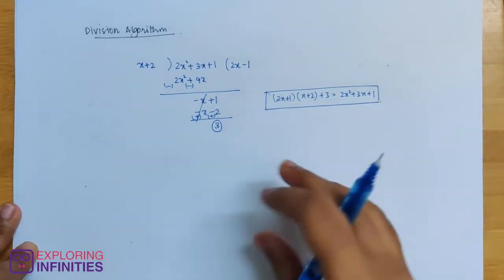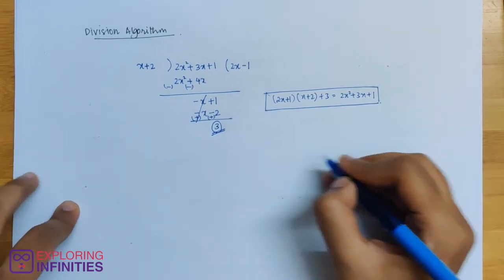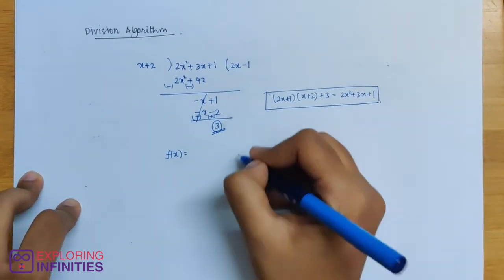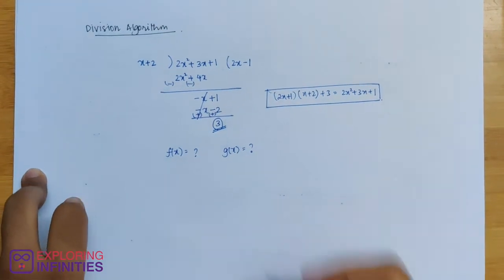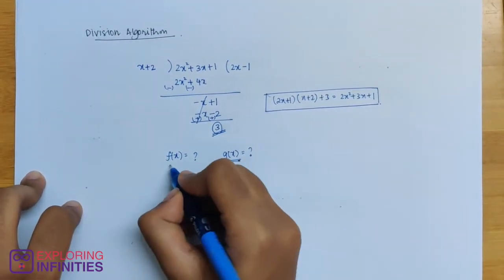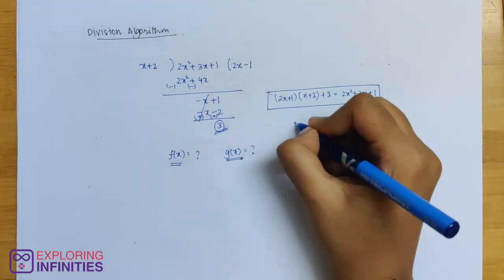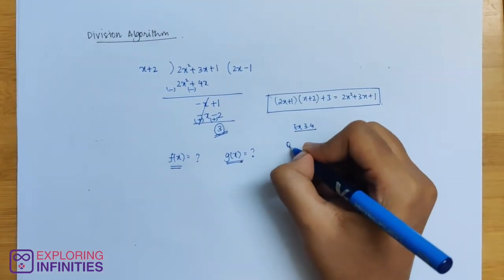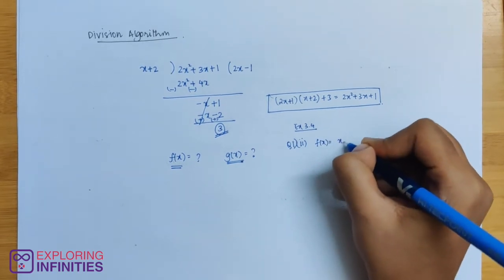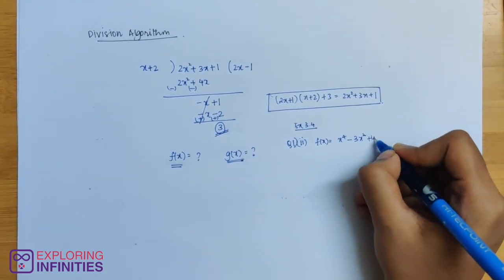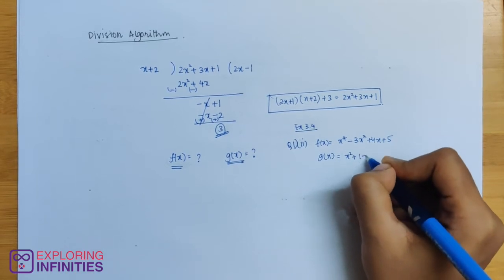When we relate zeros to polynomials using division algorithm, if remainder is zero, then the divisor is a factor. We will solve questions from exercise 3.4. Given f of x and g of x, we divide f of x by g of x. If remainder is zero, we can find the remaining zeros.